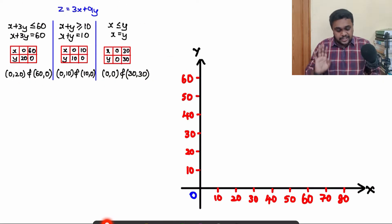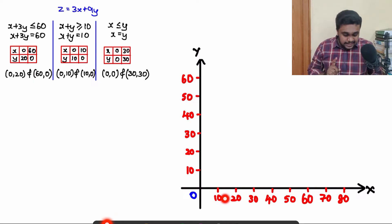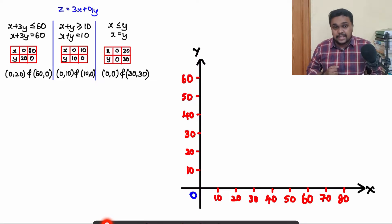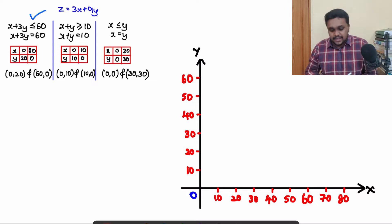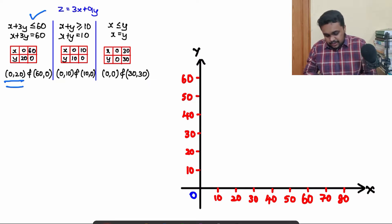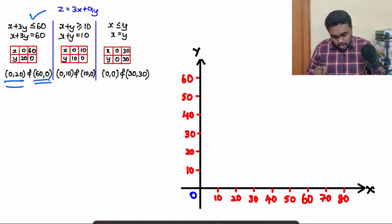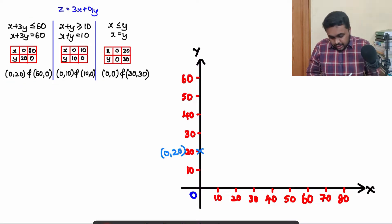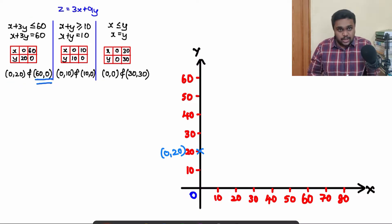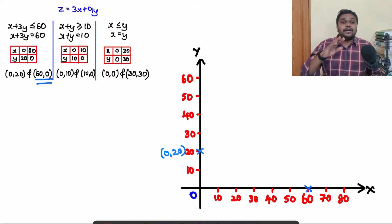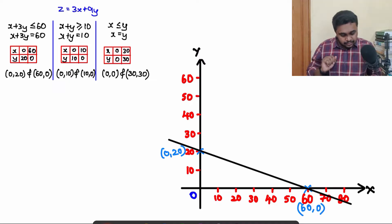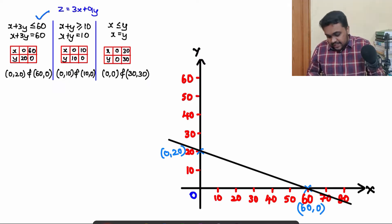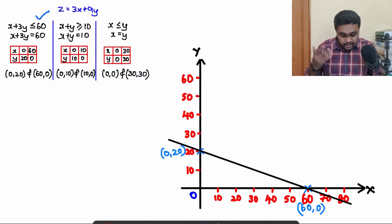Now we will draw the graph. The scale is: x-axis, 1 cm = 10 units; y-axis, 1 cm = 10 units. Considering the first line with points (0, 20) and (60, 0), I will mark them. The equation of this line is x + 3y ≤ 60.